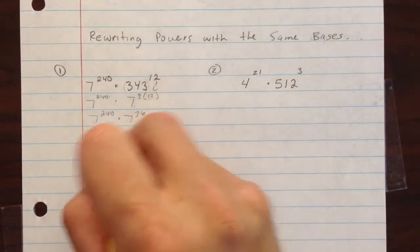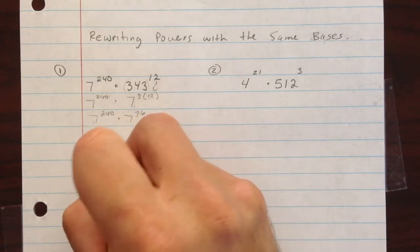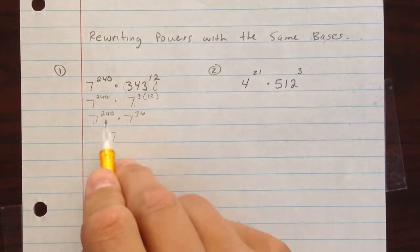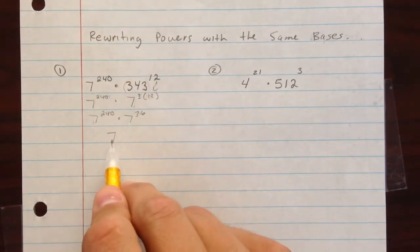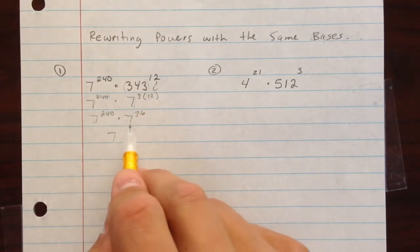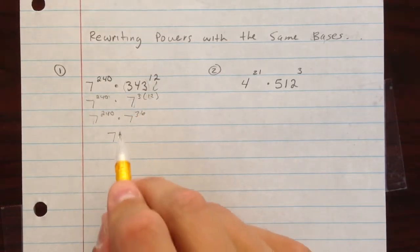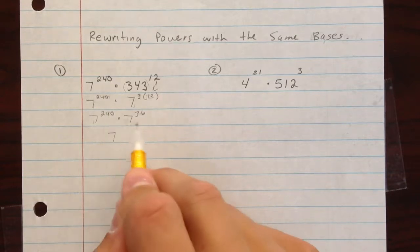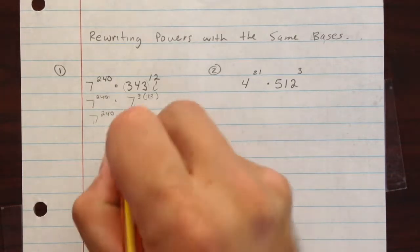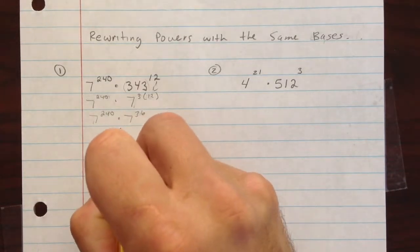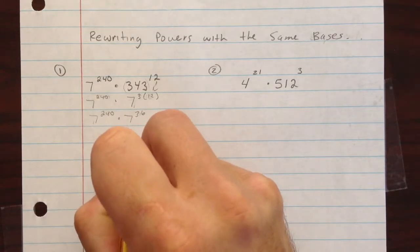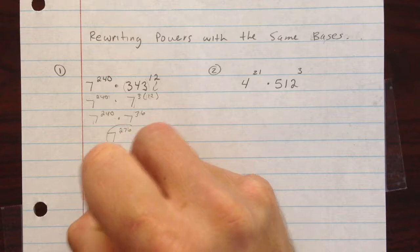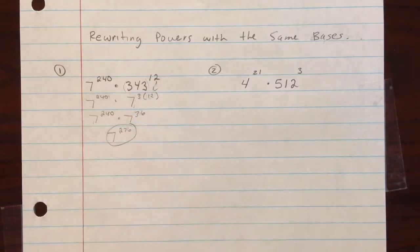And then after that, we can multiply with the same base. Keep the base of 7 — do not multiply 7 times 7. And add 240 and 36 to get 276. We wouldn't actually expect you to find out what that equals; that's good enough on this problem.